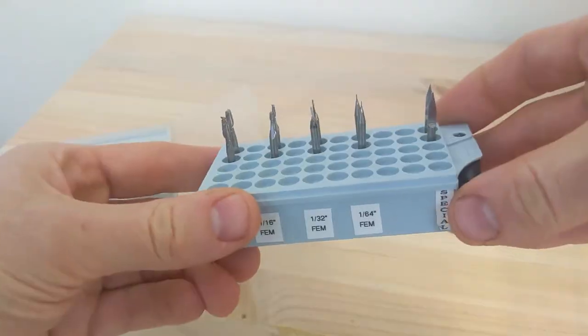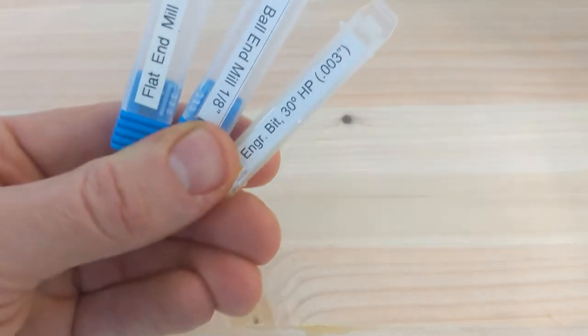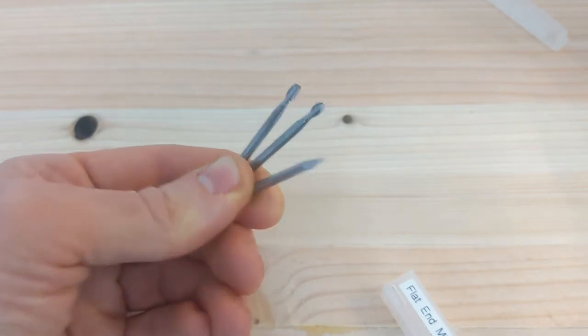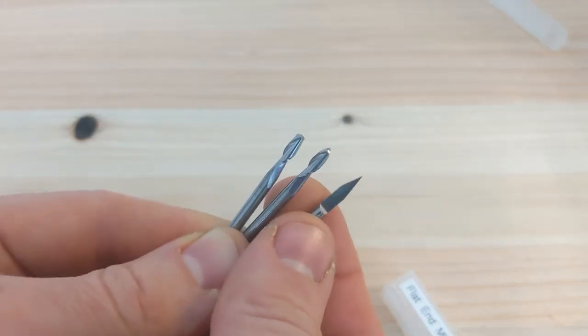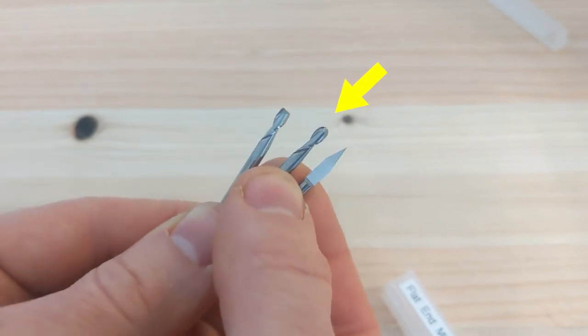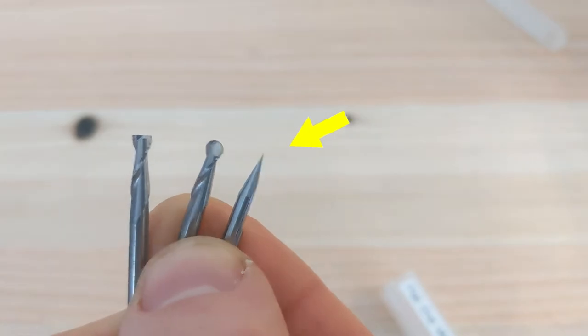Our tool library includes bit sizes from eighth inch all the way down to one one-hundredth of an inch, and our bit types include flat, ball, and V-shaped end mills. Flat end mills are used for removing bulk material and getting smooth surfaces, ball end mills are used for 3D contouring, and V-carve end mills are used for engraving and chamfering.